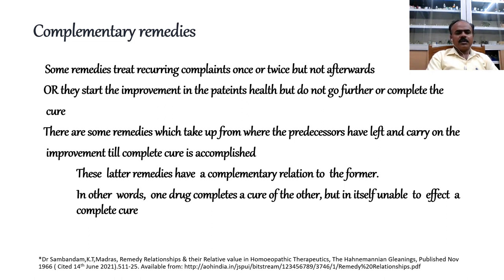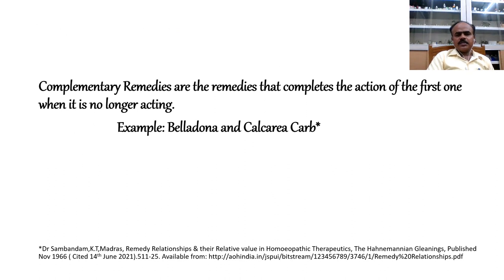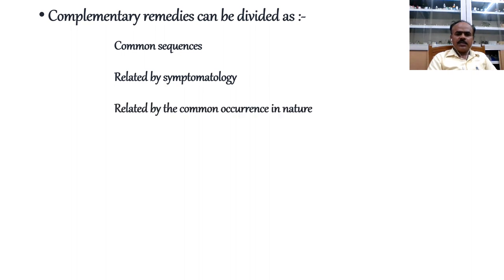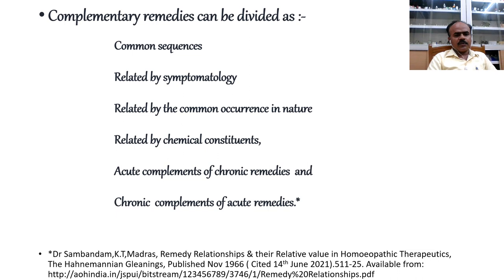In other words, one drug completes the cure of the other but is itself unable to affect a complete cure. The common example is Belladonna and Calcarea Carb: after giving Belladonna again and again, if the inflammatory symptoms keep coming back, we can complete the cure by giving Calcarea Carb. Complementary remedies can be further divided depending on common sequences related by symptomatology, related by common occurrence in nature, related by chemical constituents, acute complements of chronic remedies, and chronic complements of acute remedies.